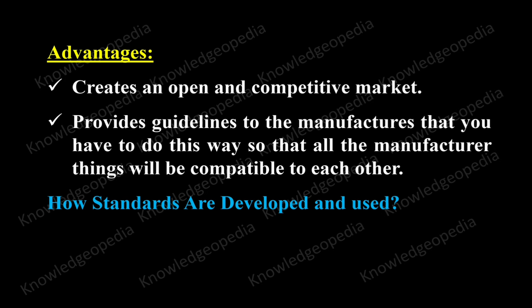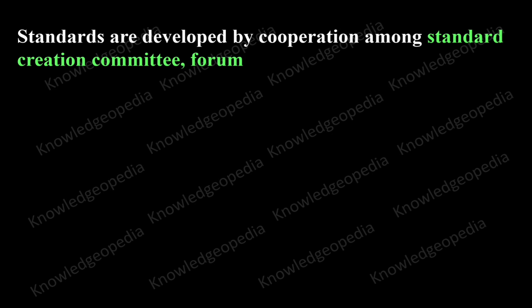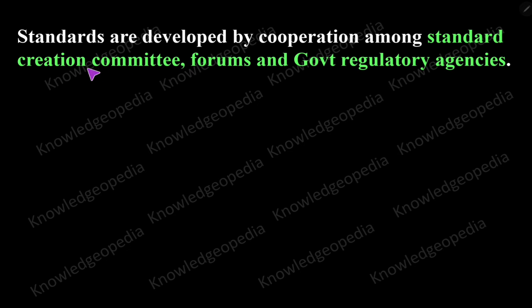Now let us discuss how standards are developed and used. Standards are developed by cooperation among three groups of people: the standard creation committee, forums, and government regulatory agencies. These three groups coordinate to ensure that the standard is created and used.